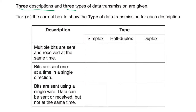Three descriptions and three types of data transmission are given. Multiple bits are sent and received at the same time — that is duplex; an example is a telephone where both parties can talk simultaneously. Bits are sent one at a time in a single direction — that is simplex; examples include television, radio, or a mouse and keyboard. Bits are sent using a single wire and data can be sent or received but not at the same time — that is half duplex; an example is a walkie-talkie.